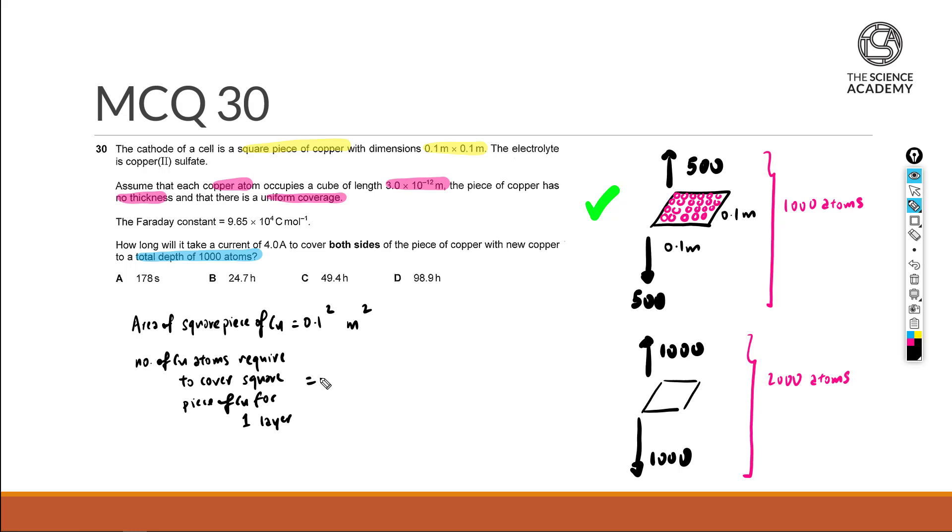It will then actually be the area of the square piece of copper divided by the area of the copper atom. In this case it will be 3.0×10^-12, but we will have to square it. Because we are now assuming that this copper atom itself is shaped as a cube.